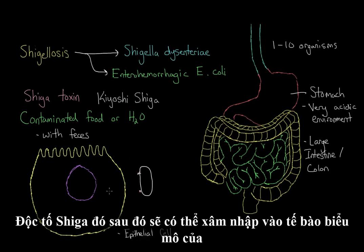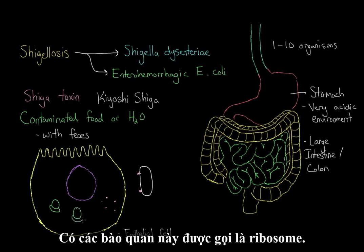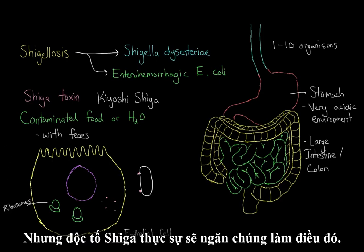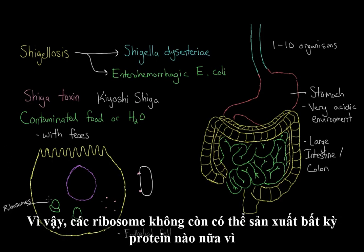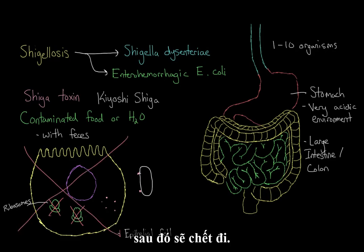Here is one such epithelial cell. The bacteria will have the Shiga toxin associated with its cell wall. That Shiga toxin will then be able to enter the epithelial cell of the large intestine. Now in all eukaryotic cells in the human body, you have these organelles called ribosomes, which are responsible for synthesizing proteins. But the Shiga toxin will actually stop them from doing that, so the ribosomes are no longer able to produce any proteins.